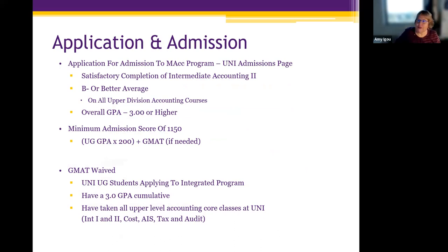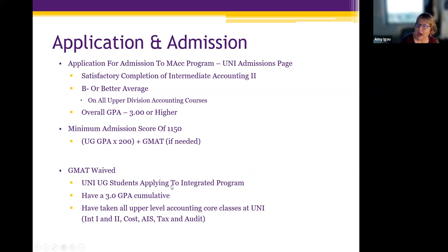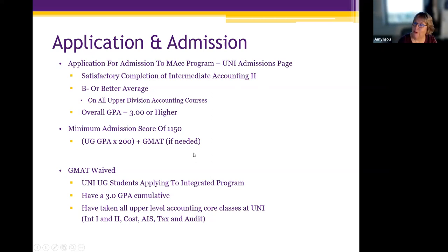To apply, the requirements to get into the MAC: you need to have completed the four core accounting classes — Intermediate 1, Intermediate 2, Cost, and AIS — with a B-minus or better average in those four classes and an overall GPA of 3.0. The GMAT is waived for all UNI students who have taken their upper-level accounting classes here. If you have a B-minus or better in accounting and a 3.0 overall GPA, you meet the minimum qualifications. If you're borderline, let's talk and see if we can put together a plan.